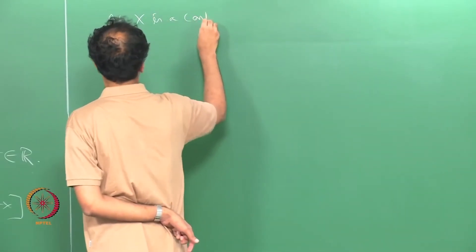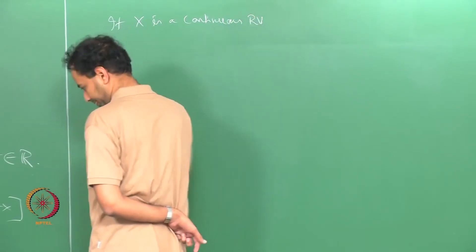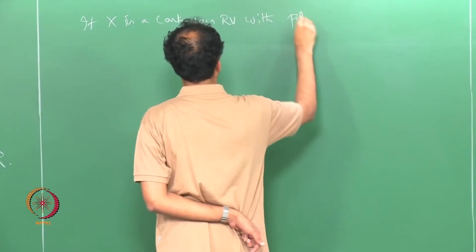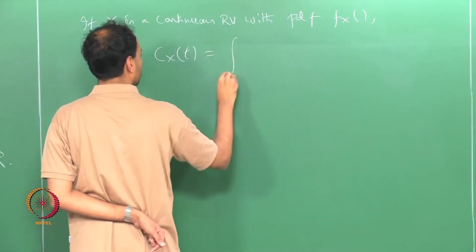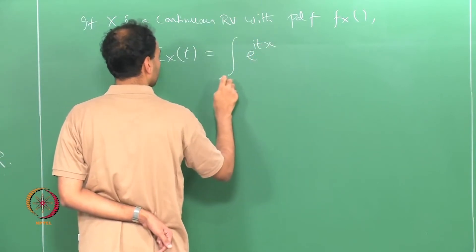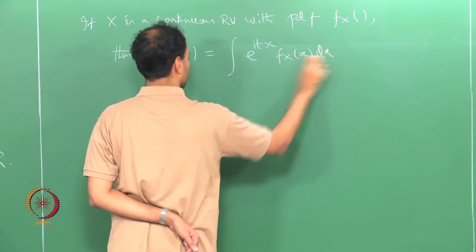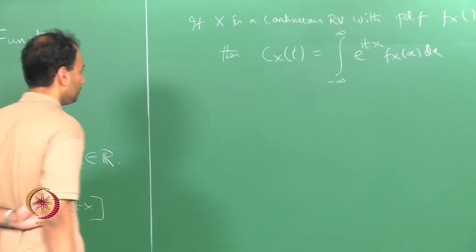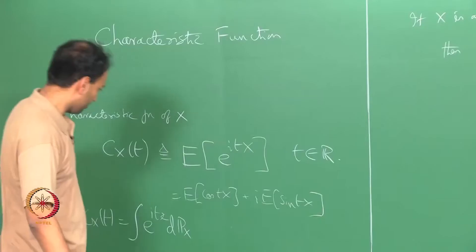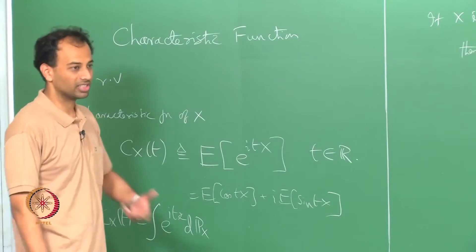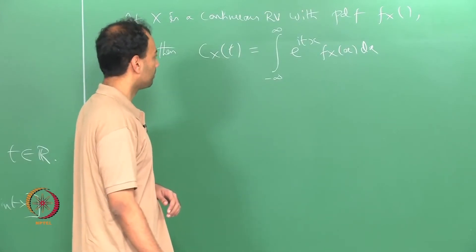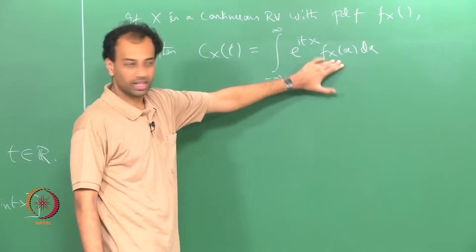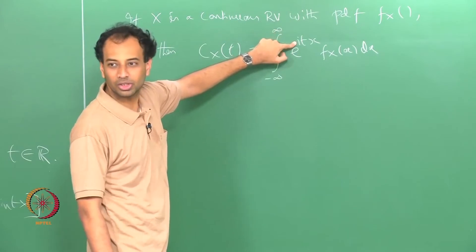In particular, when you have a density — if x is a continuous random variable with probability density function f_x — then c_x(t) equals the integral from minus infinity to infinity of e^{itx} f_x(x) dx. This is like a Fourier transform of the PDF, except that the Fourier transform usually has a negative sign — that is the only difference.